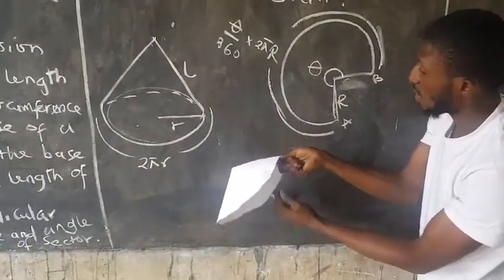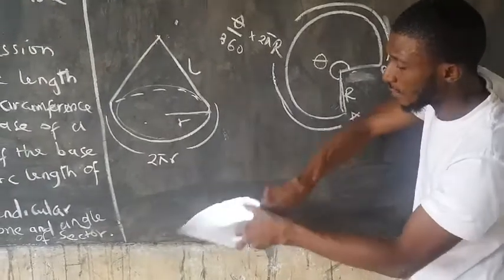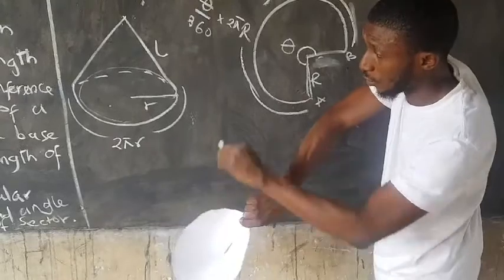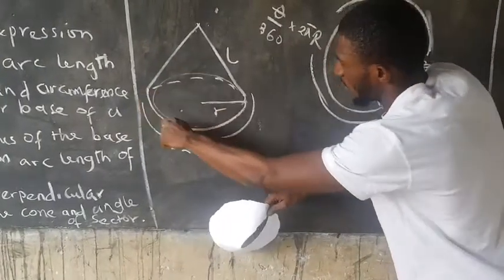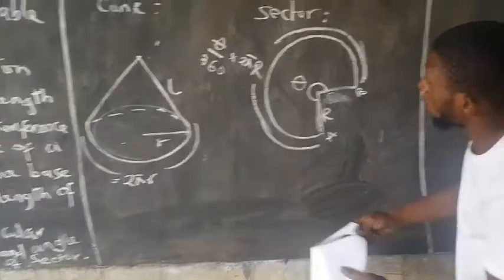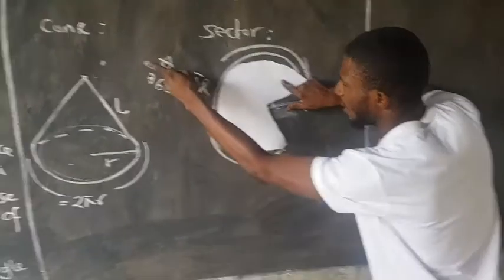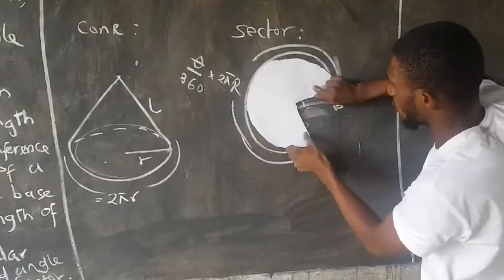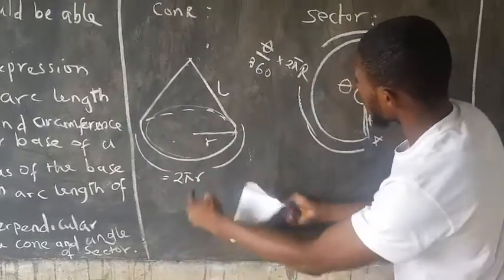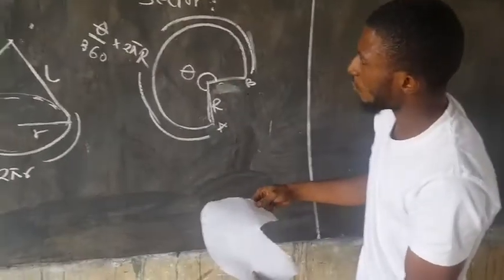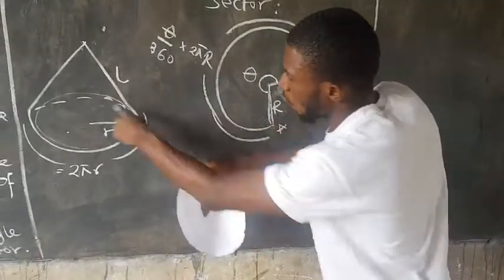From the circular base, we have the radius, which is any distance to the center from this circular base. For every circular object, to calculate the circumference or the total distance covered, we use the formula 2πr. This 2πr is the total distance covered by the circular base. But for this sector, the base is the arc length, and the total distance of this arc length is given as θ/360 × 2πR, where capital R is the radius of the sector and small r is the radius of the circular base of the cone.